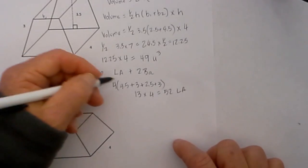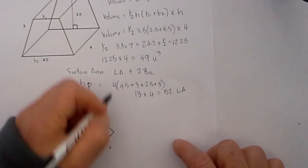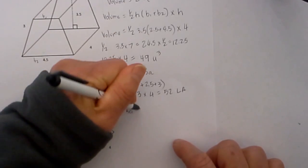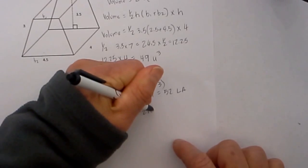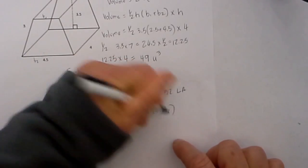We now need to find the area of two bases, and the base area is similar to finding the volume. You will take the base area equals 1/2 the height times base 1 plus base 2.